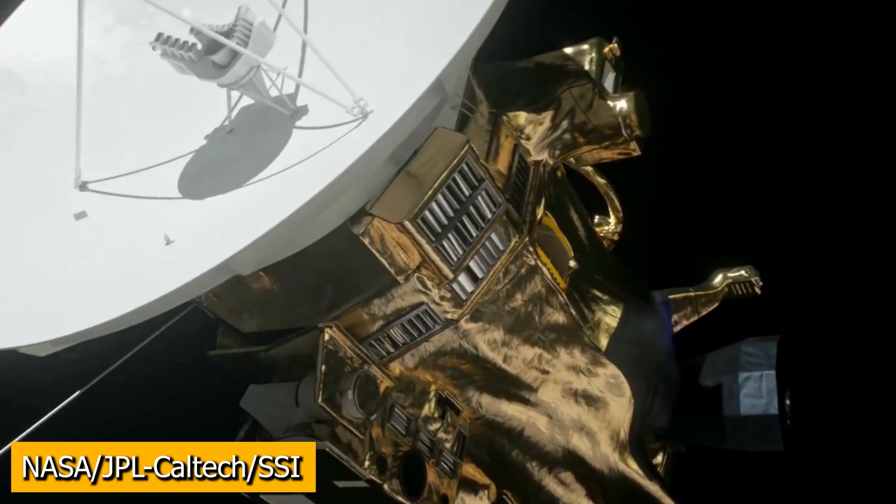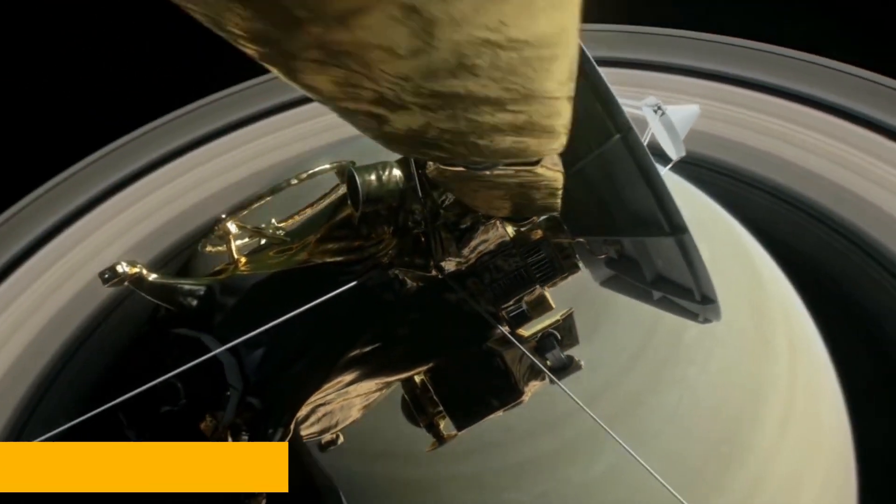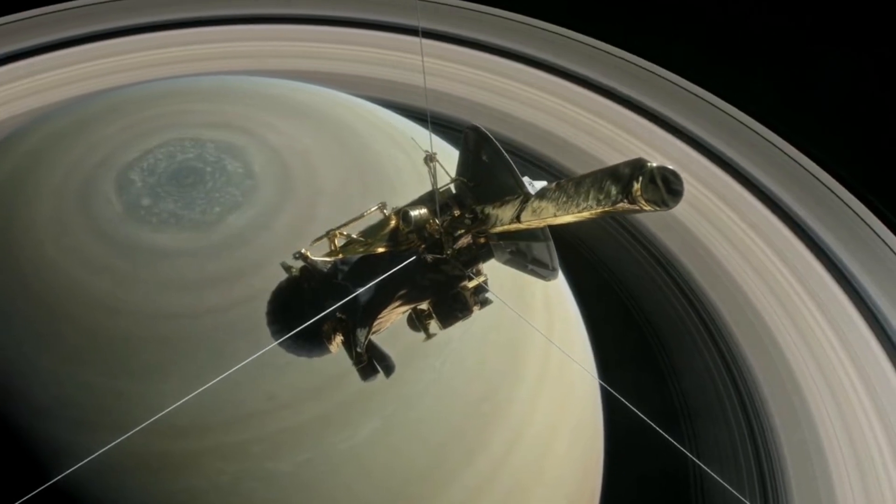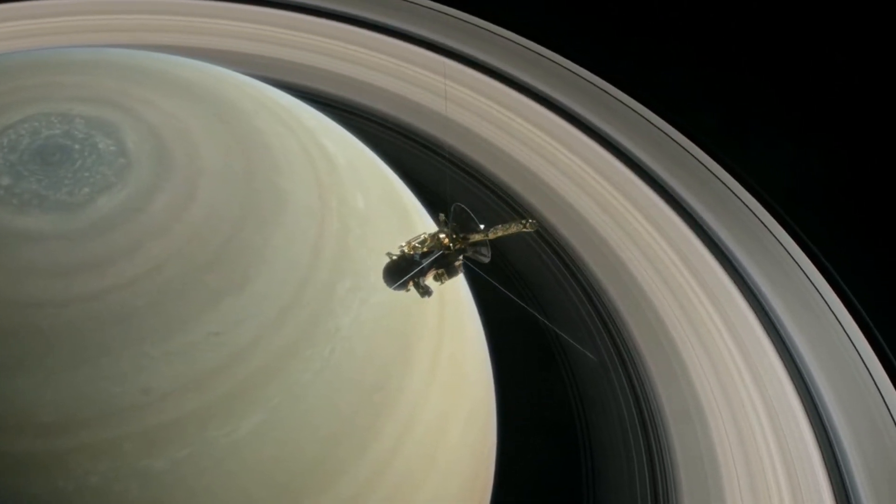You may be wondering, we've sent multiple missions to Saturn, for example the most recent one being Cassini. So how was this spacecraft that was literally orbiting around Saturn not able to detect these new moons? And that's an excellent question.